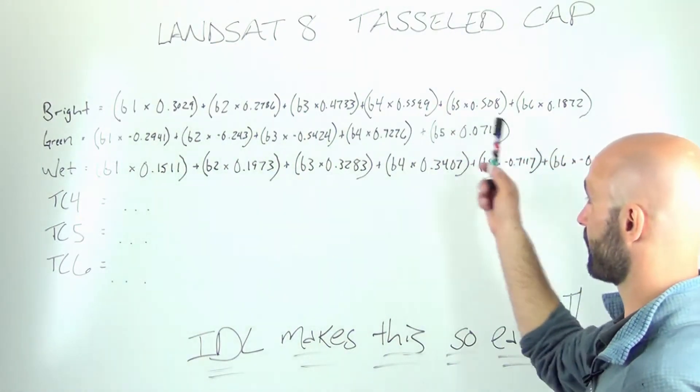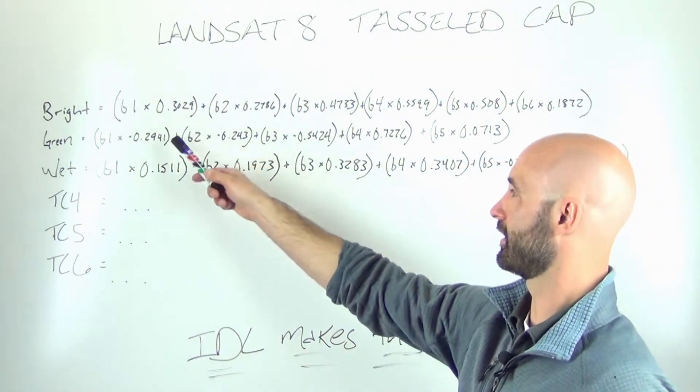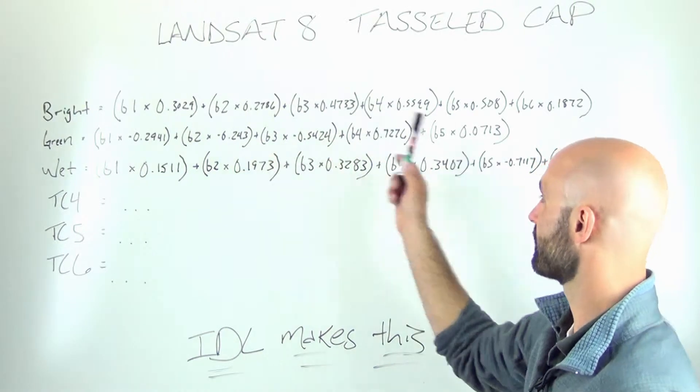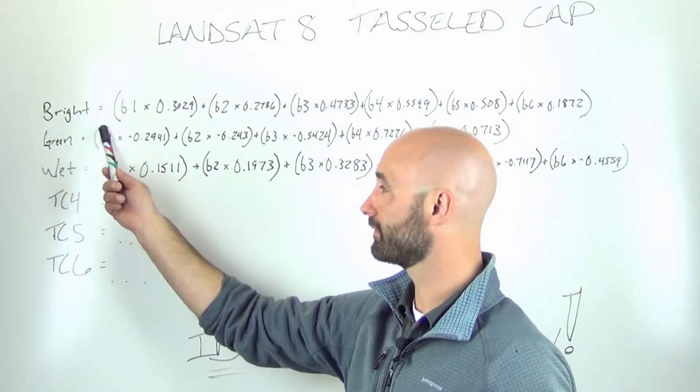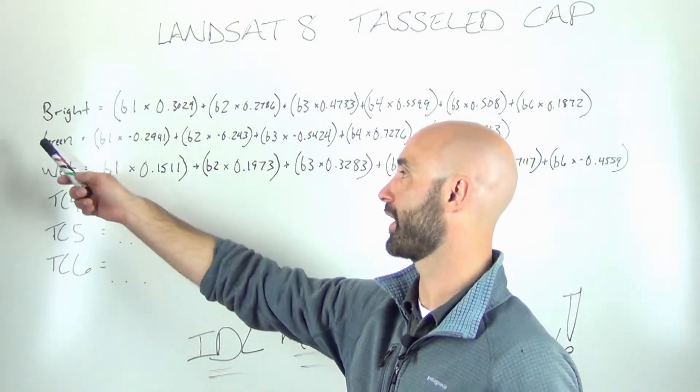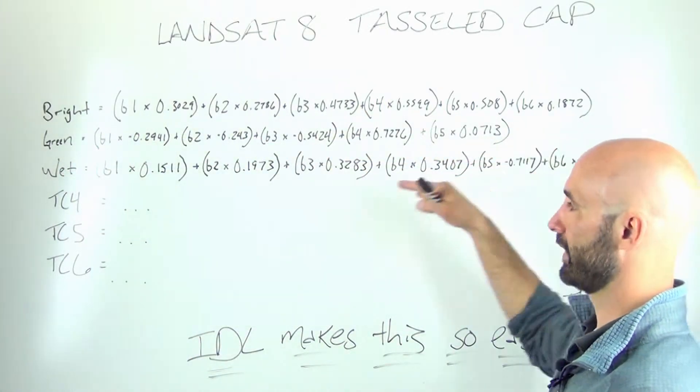It takes the various bands from the multispectral image and it just applies some offsets and adds these all together. And then you come up with these bands that actually have the brightness. The brightest pixels are accentuated in this first band.